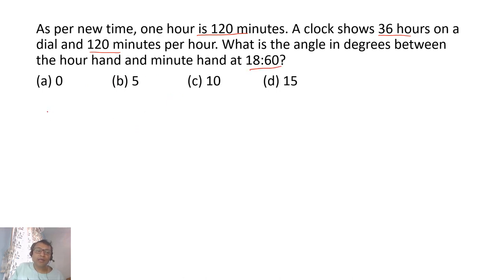First, let's look at: 36 hours is one circle on the dial, means it shows total 36 hours on one dial. And 36 hours is nothing but 360 degrees, so within one hour will be 10 degrees.